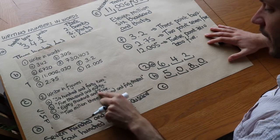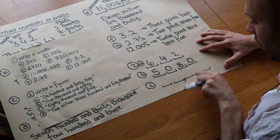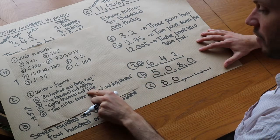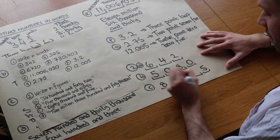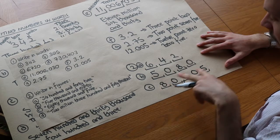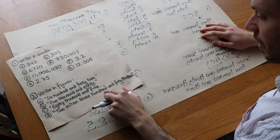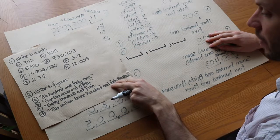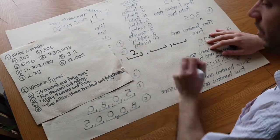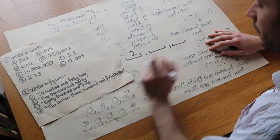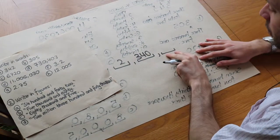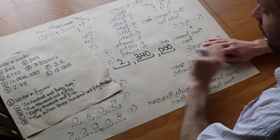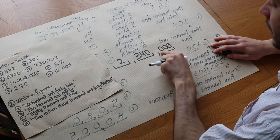For 'eighty thousand and five': we have eighty thousands in the thousands block, and five as the units digit. Everything else not stated is zero, giving us 80,005. Finally, for 'two million three hundred and forty thousand': in the millions block we have two, in the thousands block we have three hundred and forty, and in the units block we have nothing, so all three digits there are zero. That gives us 2,340,000.